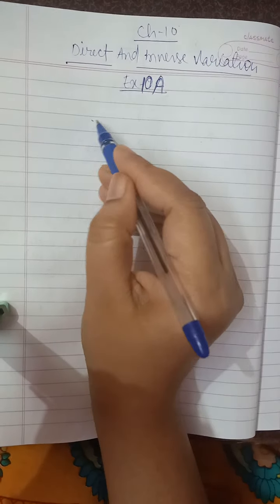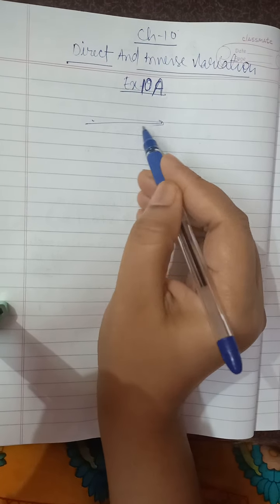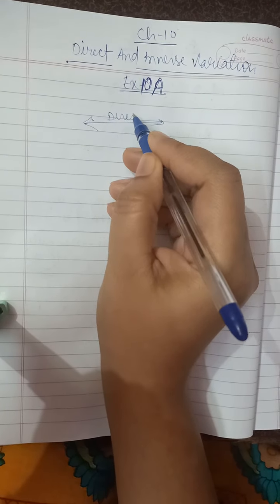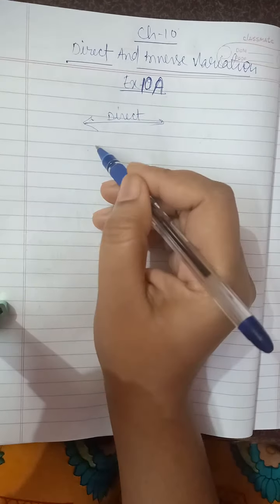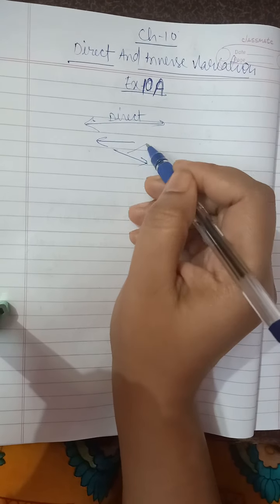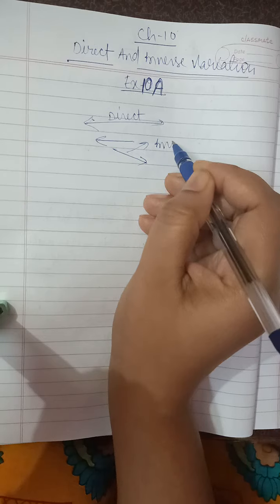When two values increase or decrease simultaneously, it is called direct proportion. When one value increases and the other decreases, then it is called inverse variation.